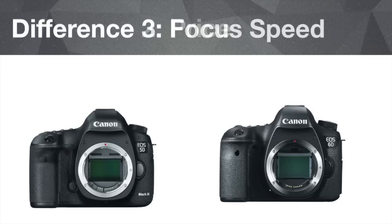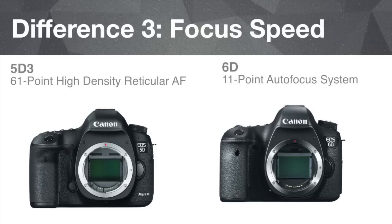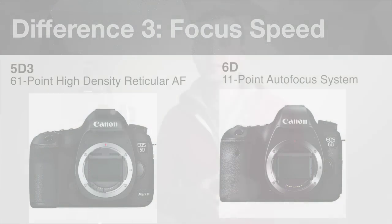Another big difference is autofocus speed. The Canon 5D Mark III has much more advanced focusing features and a lot more focusing points. So if you're going to be doing a lot of stills, that might sway you toward the 5D Mark III. The Canon 6D is going to be a little slower, so think about that if you're doing sports photography or anything like that.